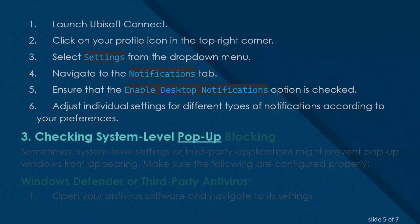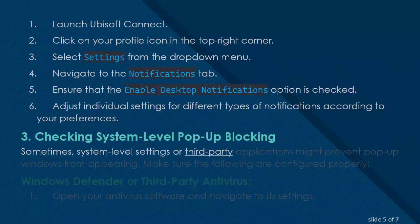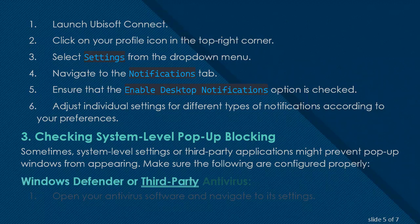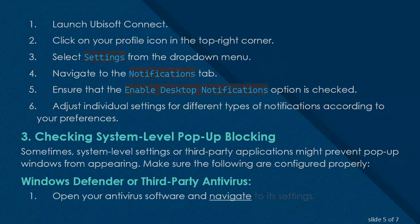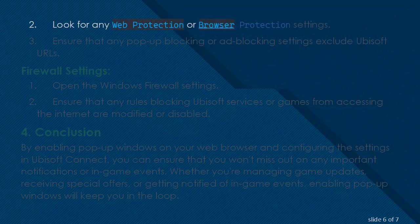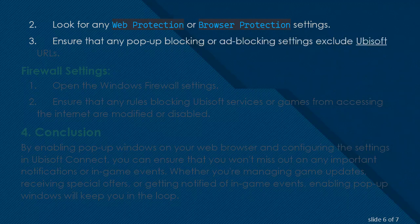Checking System Level Pop-Up Blocking: Sometimes system-level settings or third-party applications might prevent pop-up windows from appearing. Make sure the following are configured properly. For Windows Defender or third-party antivirus, open your antivirus software and navigate to its settings. Look for any web protection or browser protection settings and ensure that any pop-up blocking or ad blocking settings exclude Ubisoft URLs.